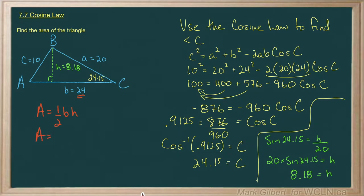All that's left now to find the area is to plug in these values. It took us a little bit to find that height, but it's just using the cosine law and some right angle trigonometry. Multiplying this out, I get an area of 98.16, and there's our answer.